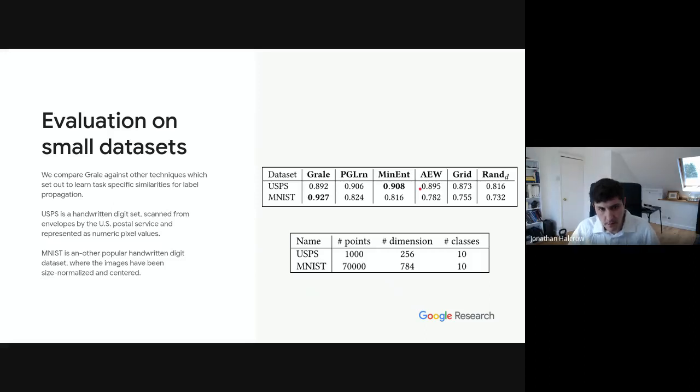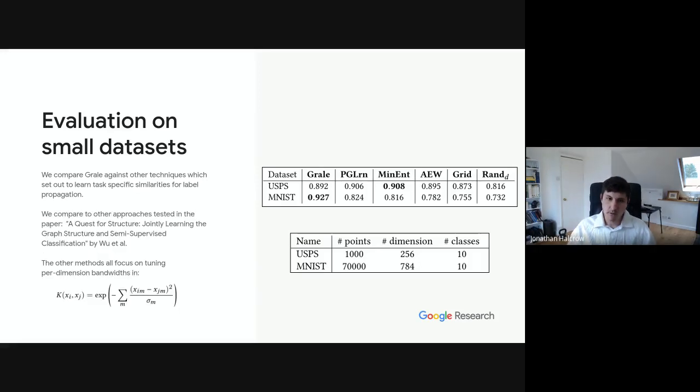To evaluate GRAIL, we start by comparing it against some other similar techniques for learning task-specific similarities for label propagation on two different data sets. One, the USPS data set is a handwritten digit set scanned from envelopes by the US Postal Service, and they're just represented as numeric pixel values. MNIST is also another extremely popular handwritten digit data set where the images have been sized, normalized, and centered. The techniques we compare to are all taken from this quest for structure jointly learning the graph structure and semi-supervised classification by Wu et al.